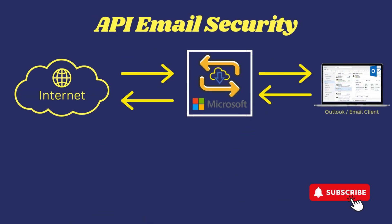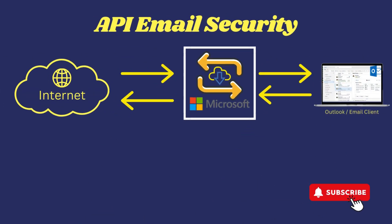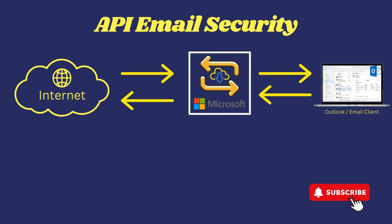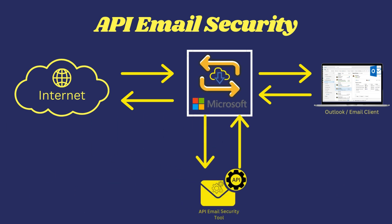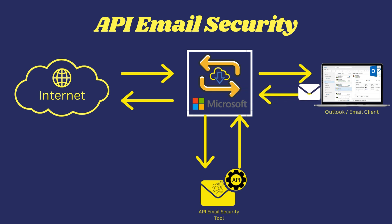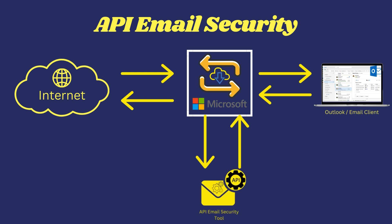How are API email security tools configured to protect users? The architecture is centered directly around your email host — the place where emails are sent. This can be Microsoft Exchange or Google Mail, the two most common. By simply installing the API security tool into either Google Mail or Exchange, the application uses these platforms' APIs as an integration to view and interact with users' emails, such as stopping them. API email security tools bring value to an organization very quickly due to their native integrations with the email host.